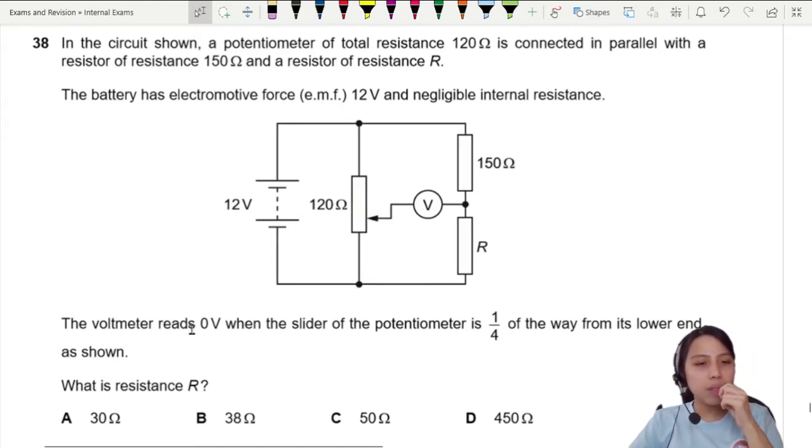They give us an important hint: the voltmeter reads zero volts when the slider of the potentiometer is one quarter of the way from the lower end. That's going to be down here, one quarter. What is resistance R?